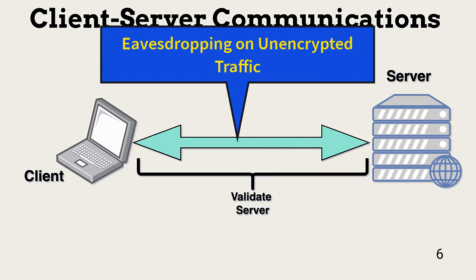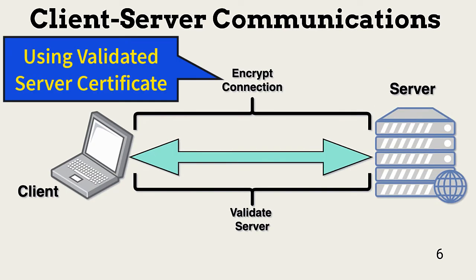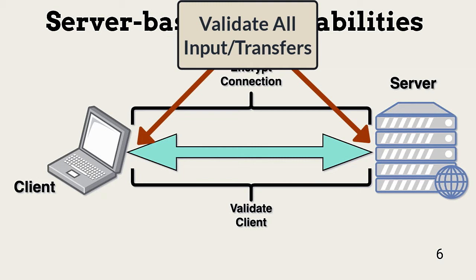Eavesdropping threats are common when the connection passes outside the network perimeter. It can also be a threat when a threat actor compromises one or more endpoint devices. We can mitigate this risk by encrypting connections. A session key is created using the server's public-private key pair, and the session key is used to symmetrically encrypt all data over the connection. If the client assumes all data and applications coming from the server are uninfected, it creates a vulnerability that enables the spread of malware. Input validation helps check data, and anti-malware can detect and block malicious executables. Host-based firewalls block unknown egress traffic. In addition, digital signing of files helps detect any unauthorized changes.